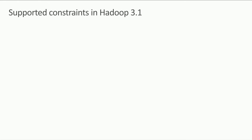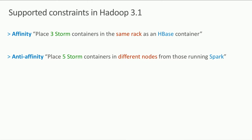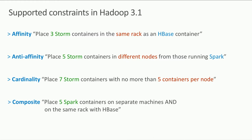In Hadoop 3.1, we support several constraint types: affinity — place three Storm containers on the same rack as an HBase container; anti-affinity — place five Storm containers not on the same node as Spark to reduce interference; cardinality — place seven Storm containers but no more than five per node; and composite constraints — for example, place five Spark containers on different nodes and not on the same rack with HBase, or on the same rack with HBase.